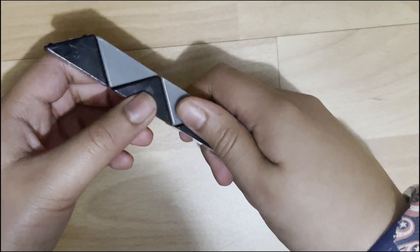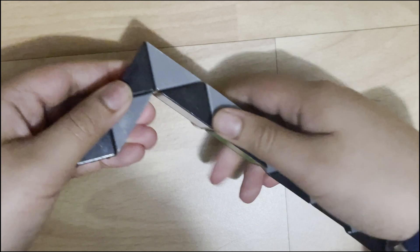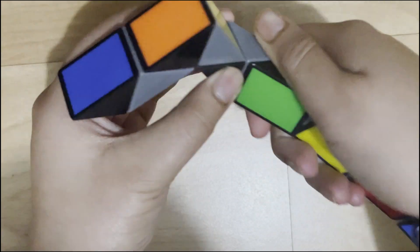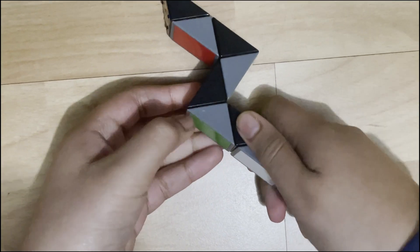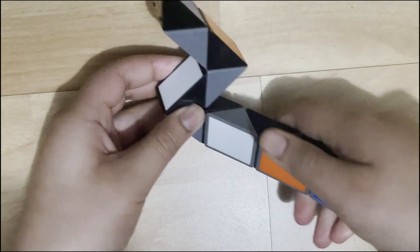So take the first three blocks and turn it twice, the next two blocks turn it twice, and then take this block and turn it towards you.